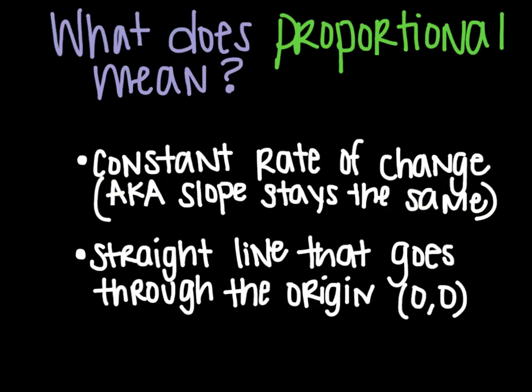First thing you need to address is what does proportional mean? I'm sure you've probably seen or heard of that word before, but what it means is a constant rate of change. In other words, the slope stays the same, and a quick reminder, the slope is the change in y over the change in x. So as your y is increasing or decreasing, your x should be increasing or decreasing at the same amount. And then lastly, it must be a straight line that goes through the origin when you are graphing.